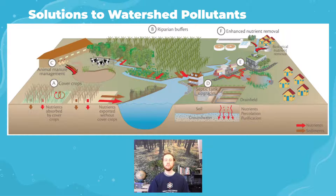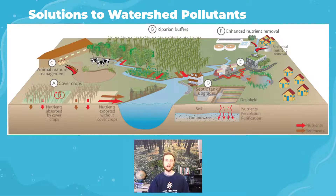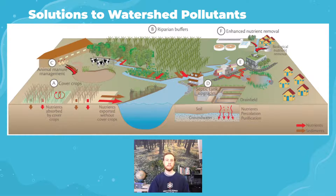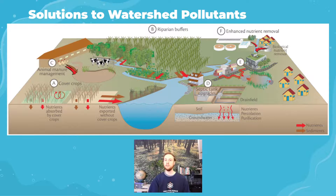Better animal manure management practices are also helpful — such as better-lined manure lagoons with higher berms to contain waste, or systems that drain waste more frequently into fertilizer pellets. Another key strategy is riparian buffers: planting vegetation alongside bodies of water acts as a giant sponge and filter, so runoff passes through vegetation before entering the water. Roots absorb water and can trap or metabolize pollutants before they reach the body of water.